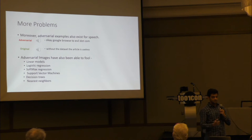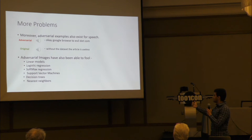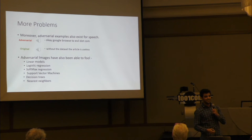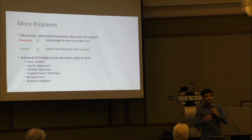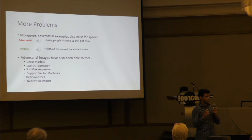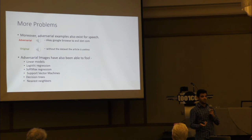But if they pass on a slightly noisier version of it — it's still the same speech — the text they get is 'okay Google, browse to evil.com.' So if you take your phone and say 'Siri, what's the weather outside?' and it takes you to a malicious site, you don't want that. The point being that adversarial attacks don't just exist for images — they exist for speech.